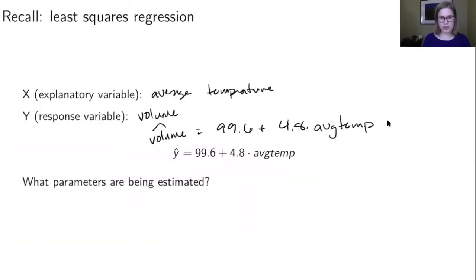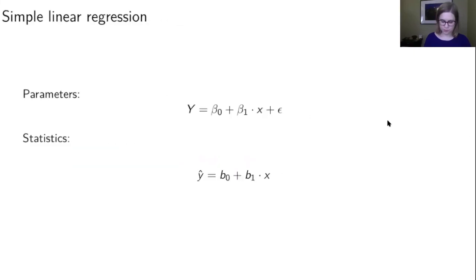That would be our best guess for the number of people on the rail trail. But when we're doing statistics, we're not always just thinking about our particular best guess. We're thinking about parameters in the population. When doing simple linear regression, we have population parameters and sample statistics.